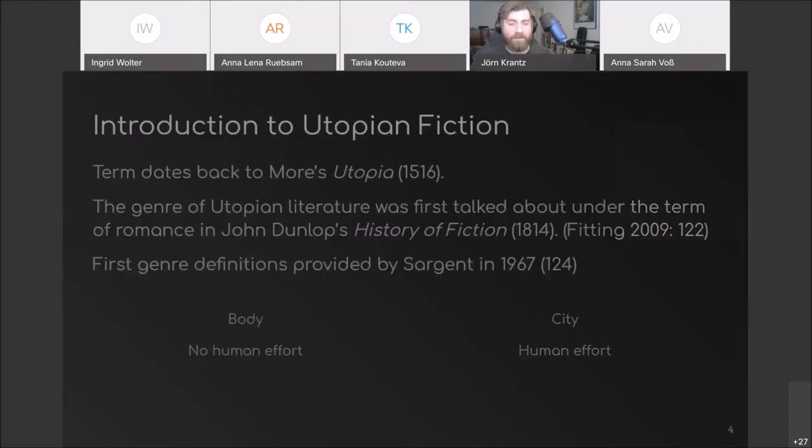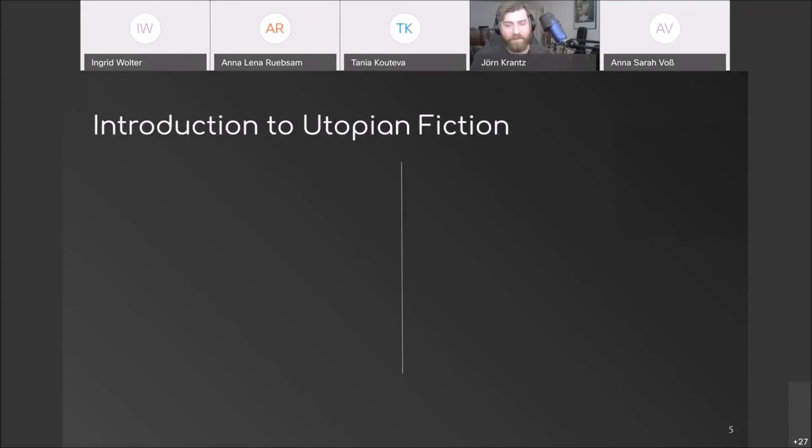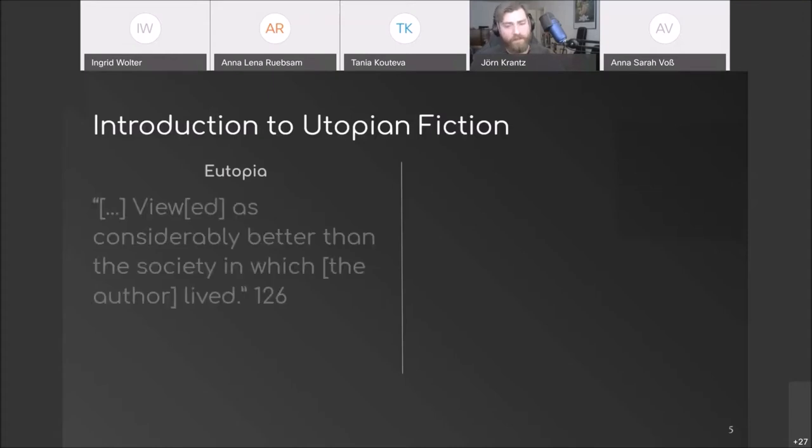It is important to note here that Sargent uses utopia as an umbrella term, similar to how drama encompasses both comedy and tragedy. He distinguishes between eutopia, which describes a society that is considerably better, and dystopia as a society that is considerably worse than the time that the author has lived in.